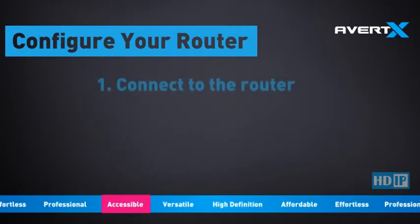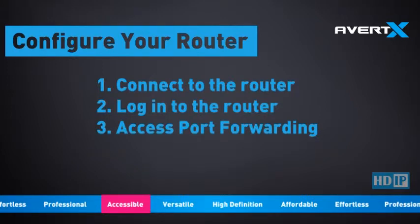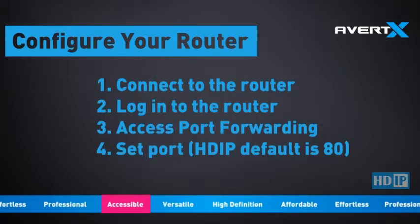Connect to the router through the router interface. Typically, this is through a web interface. Log in to the router with an administrative ID. Access the port forwarding section in the router — some may list this as port triggering, pinhole, firewall forwarding, or other terms. The port of the HDIP recorder will need to be forwarded to the internal IP address of the recorder. The default port for the HDIP system is 80.